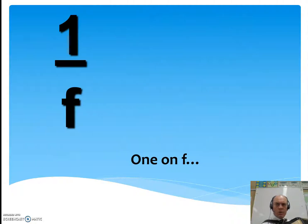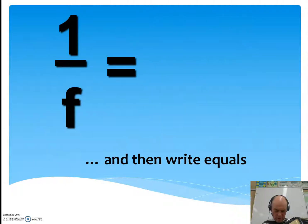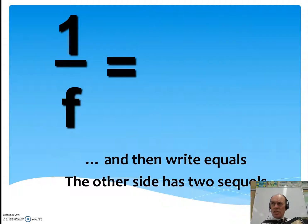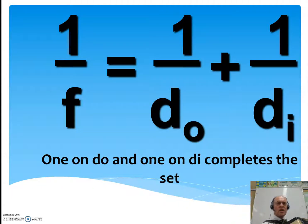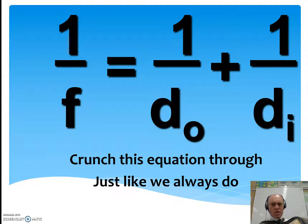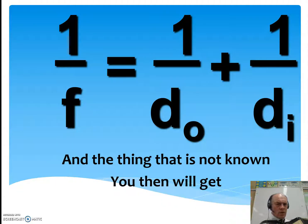A one on F, and then right equals, the other side has two sequels — one on Doe, and one on Die completes the set. Crunch this equation through, just like we always do, and the thing that is not known you then will get.